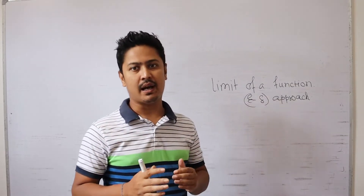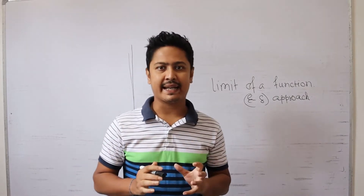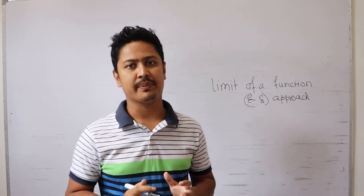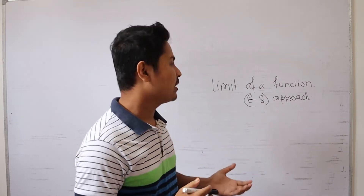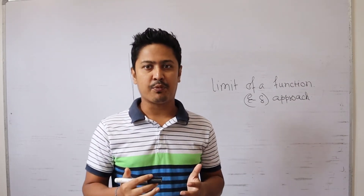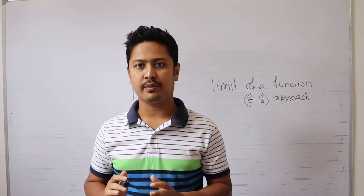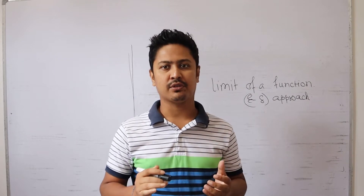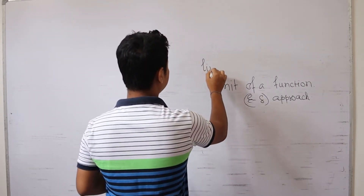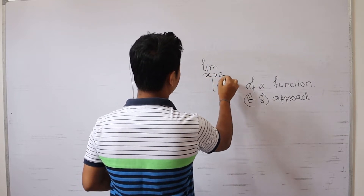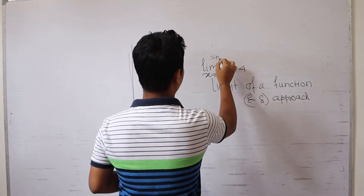You already have studied this in secondary school, so we need to calculate the limit of a function. We have already learned this. But in this video, I am going to explain the formal definition. The function example is: limit x approaches to 2 of x squared equals 4, and I am going to show that belief.